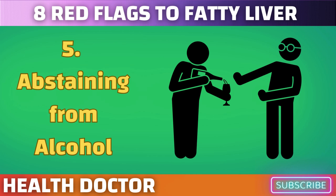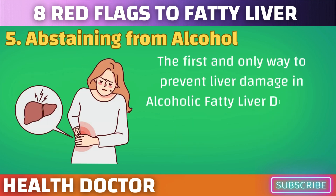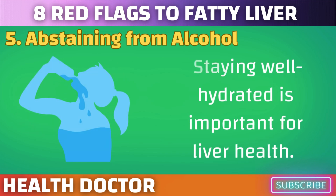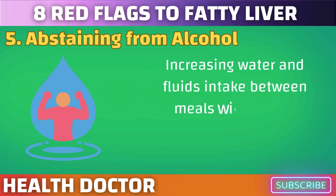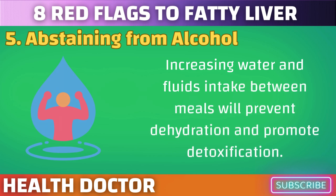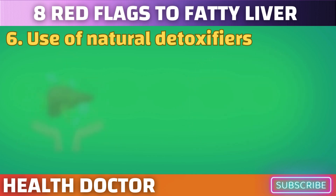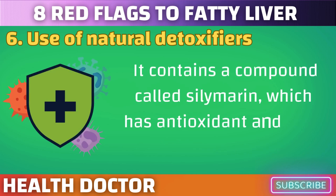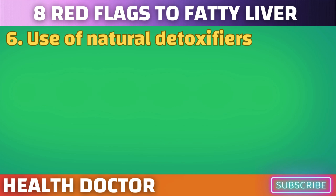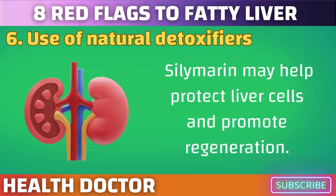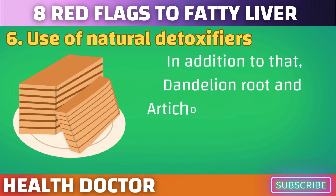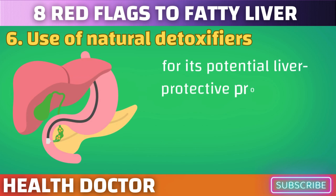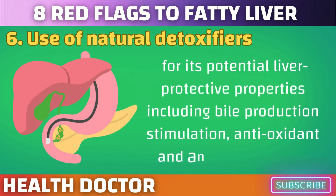The first and most important way to prevent liver damage in alcoholic fatty liver disease is the cessation and abstinence of alcohol consumption. Staying well hydrated is also important for liver health. Increasing water and fluid intake between meals will prevent dehydration and promote detoxification. Milk thistle is one of the most renowned herbs for liver health. It contains a compound called silymarin, which has antioxidant and anti-inflammatory properties that may help protect liver cells and promote regeneration. Dandelion root and artichoke leaf have also been used for centuries in traditional medicine for their potential liver-protective properties, including bile production stimulation, antioxidant, and anti-inflammatory effects.